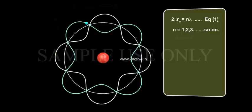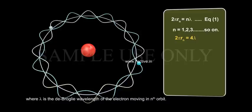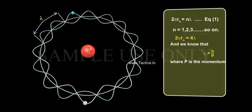That is, 2π rn equals 4λ, where λ is de Broglie's wavelength of the electron moving in the nth orbit.